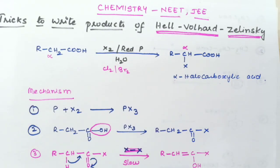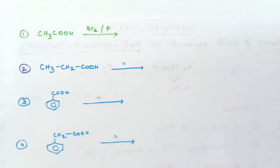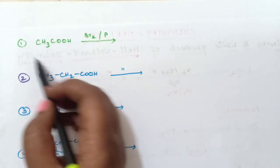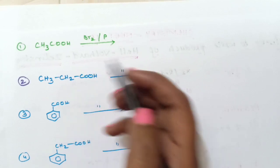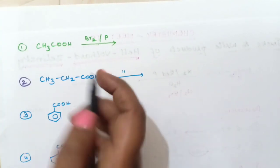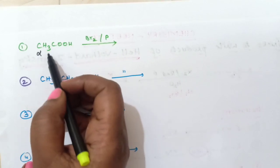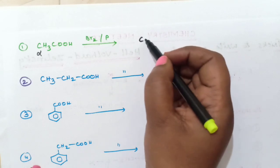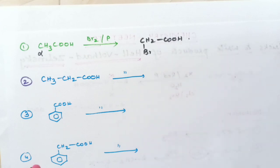Now let us use the trick to write products from given reactants. In the first example, the acid is treated with bromine in the presence of red phosphorus. Identify the alpha carbon — it has three alpha hydrogen atoms. One is replaced by bromine, giving the product CH₂BrCOOH.